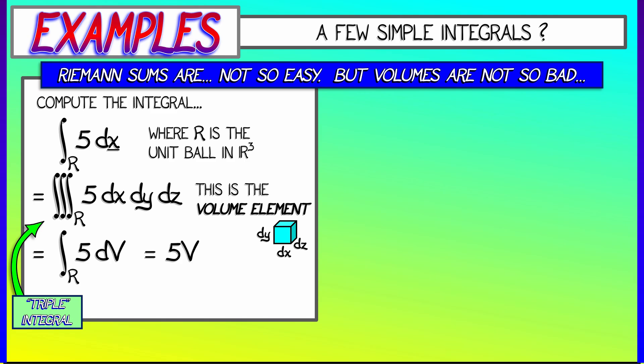The 5, because it's a constant, comes out in front since integration is linear. So I know what the volume of a unit ball is. That's 4/3π. So in the end, I get 20/3π. Now that's kind of cheap, but that is an integral that we can compute because we do understand volume.